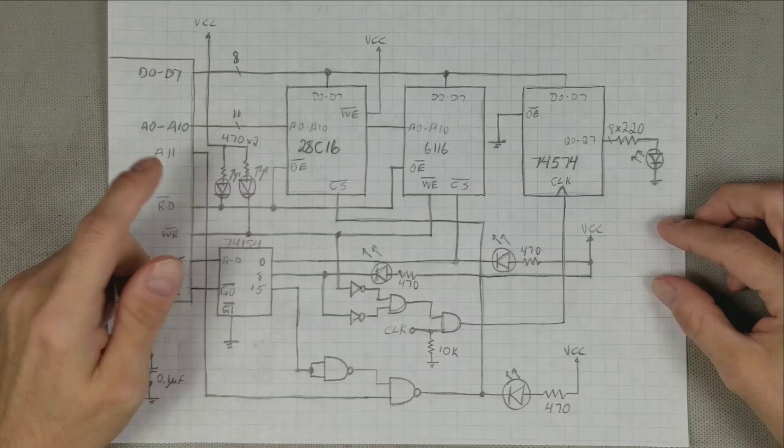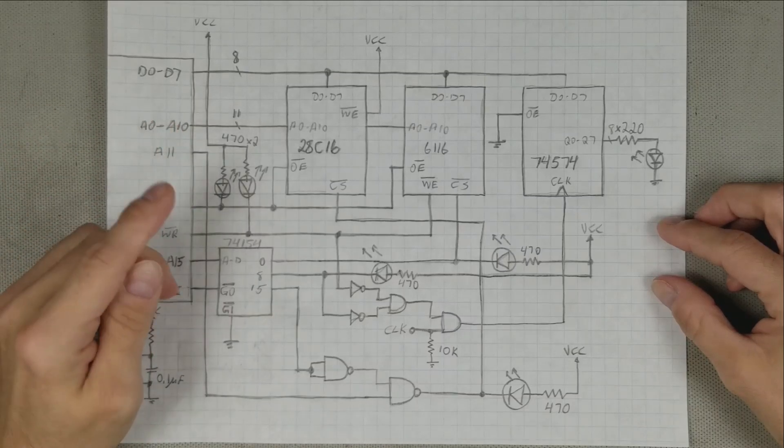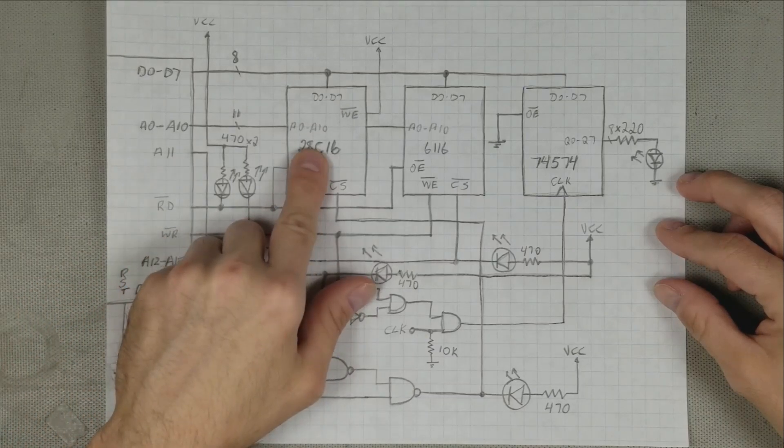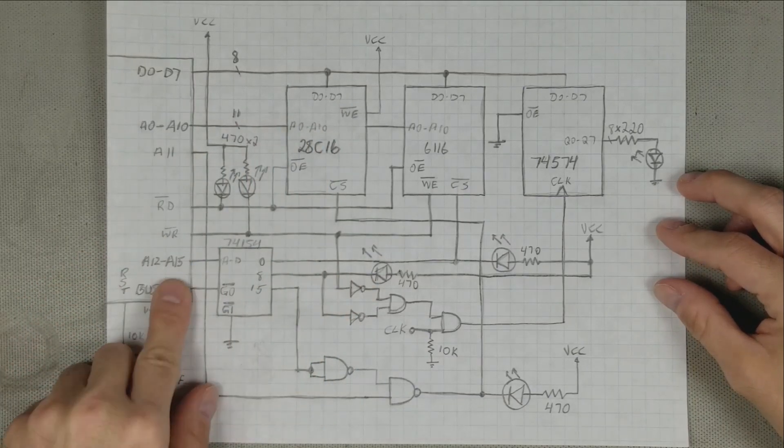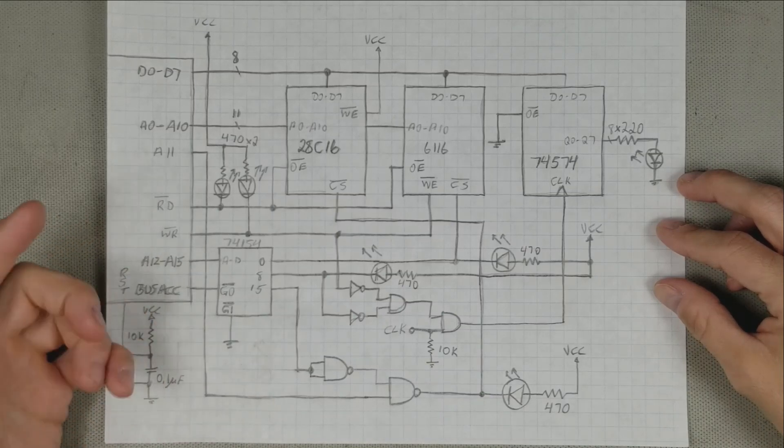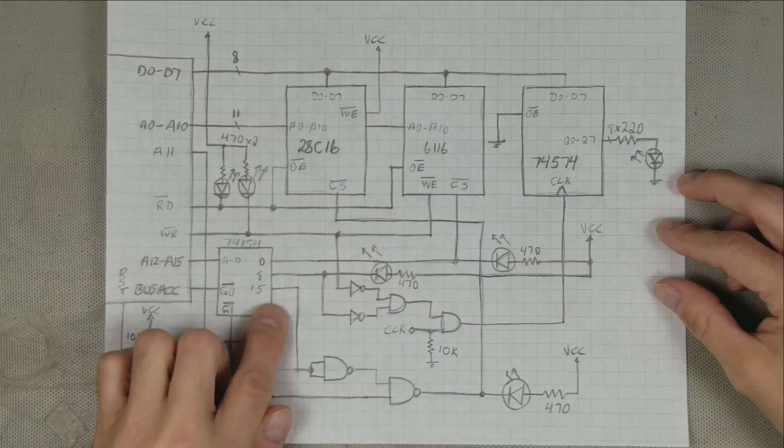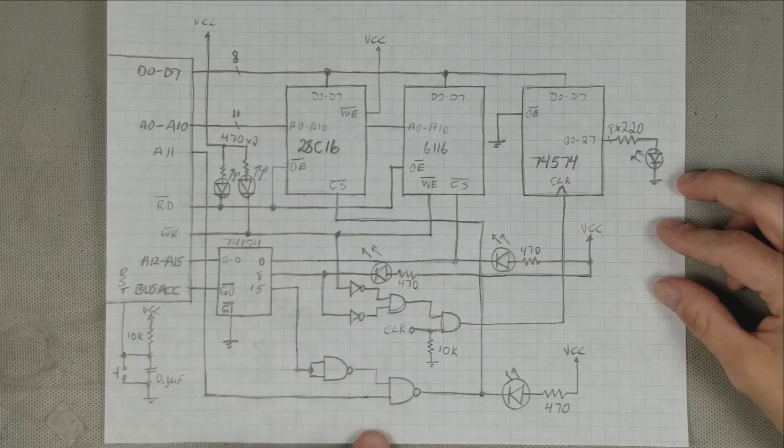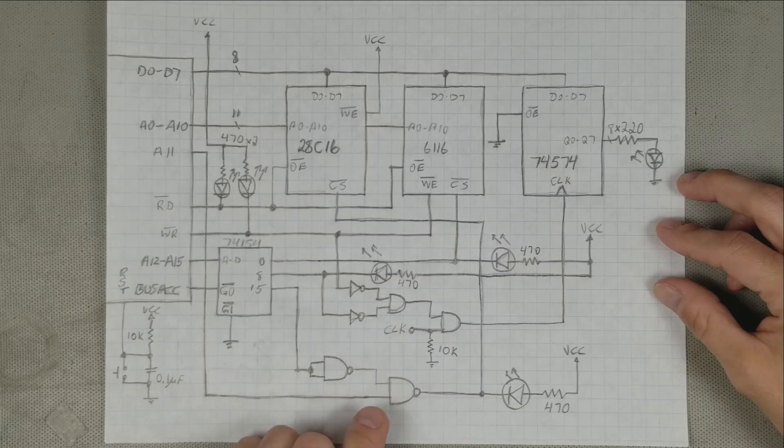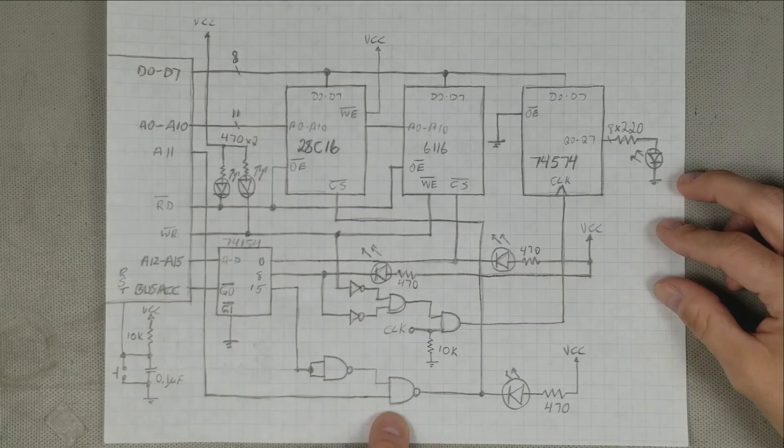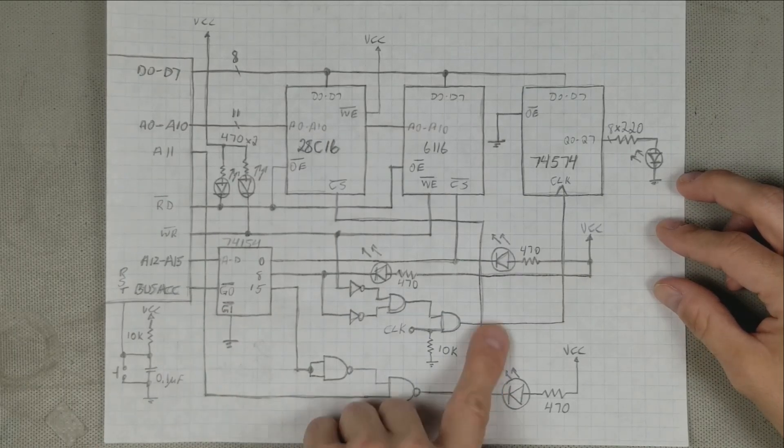Since the ROM is only 2K and the decoder uses 4K blocks, we have to take care of A11, since the ROM has A0 through A10, and the decoder is A12 to A15. So if A11 is high and the decoder 15 is low, then the ROM chip select will be low. This will be done using two NAND gates as I've shown here. The output 15 is inverted with the first NAND, so when 15 is low and A11 is high, the output of the second NAND gate is low, enabling the ROM.